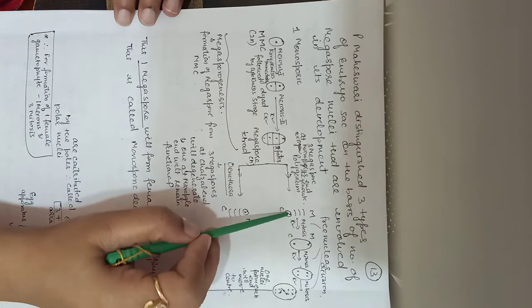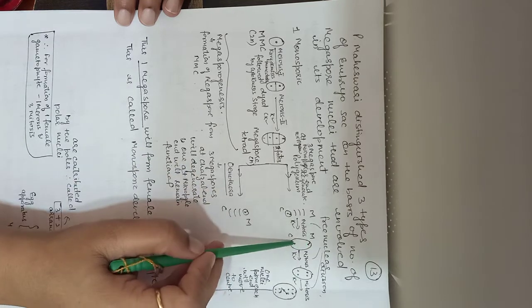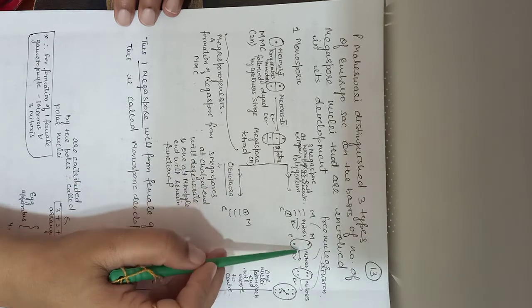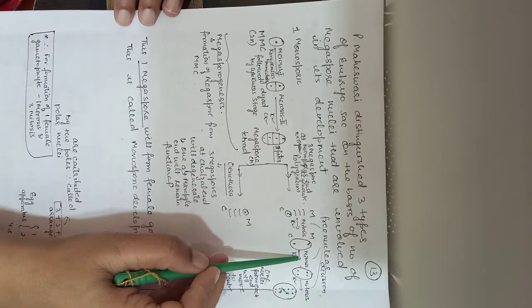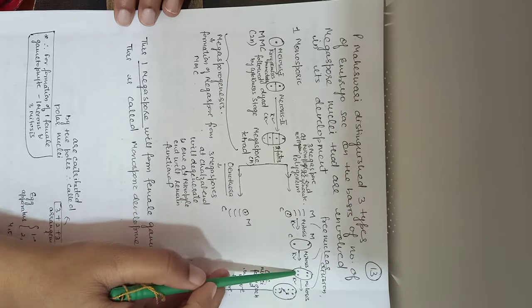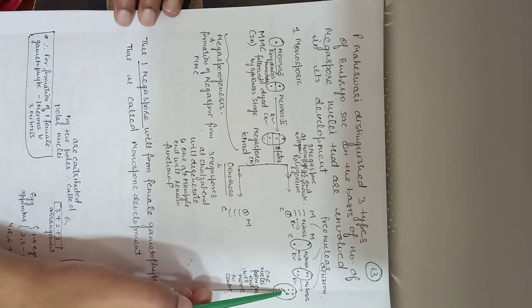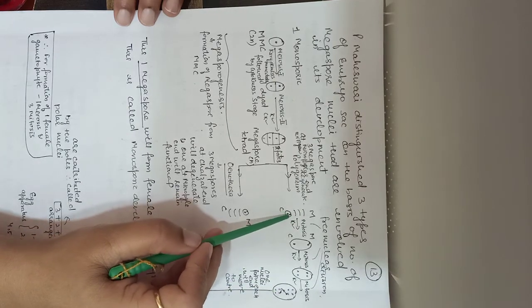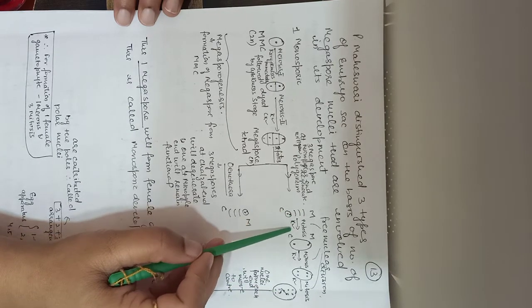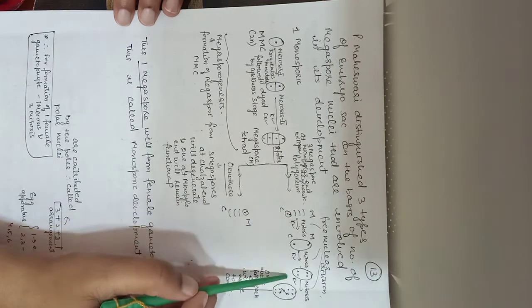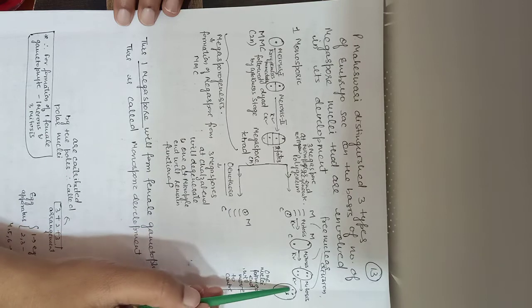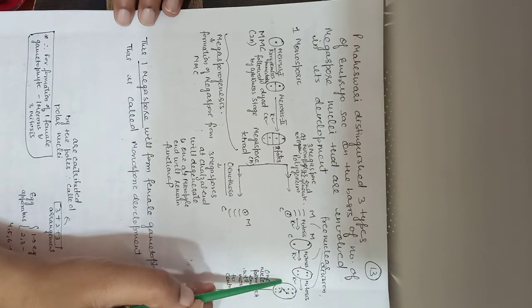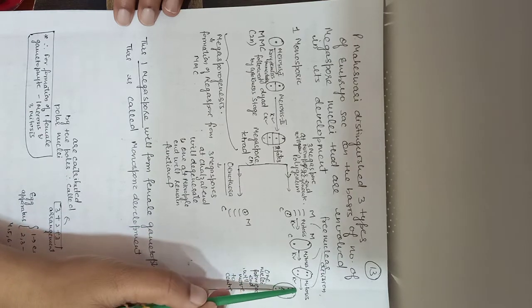The nucleus of the cell will divide to form two nuclei, then mitosis will take place again — these two nuclei will form four nuclei, and again mitosis will take place and eight nuclei will be formed. So, this megaspore will undergo three mitotic divisions, or three free nuclear divisions, to form eight nuclei, but the cell will remain one only.